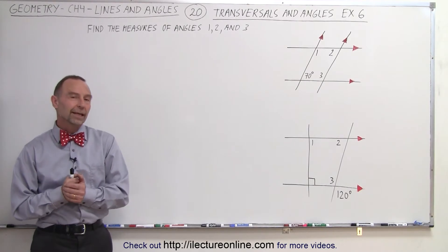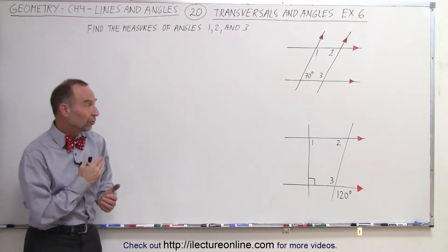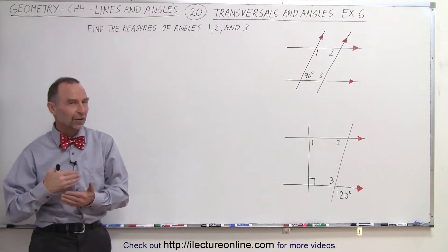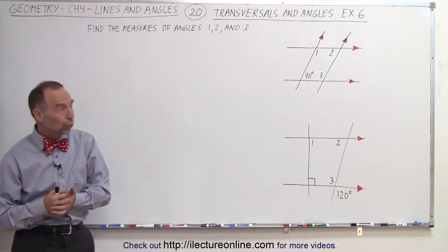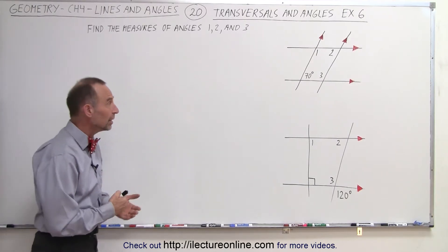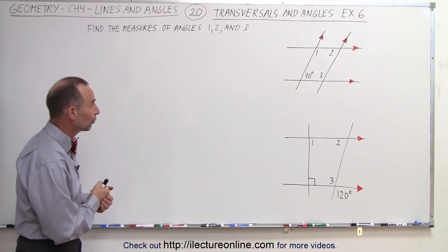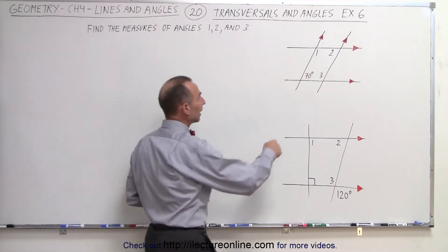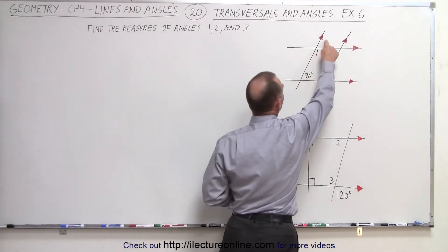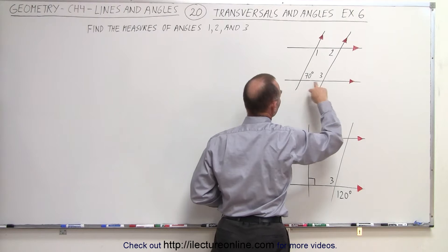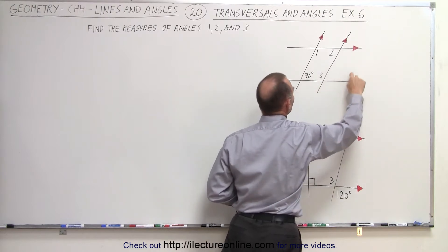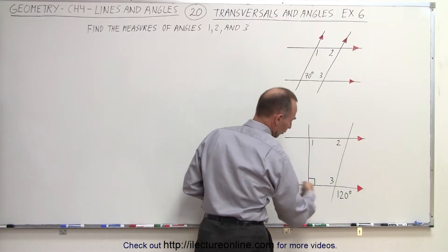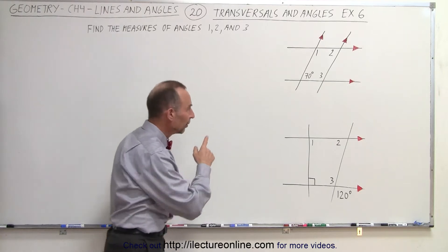Welcome to our lecture online. In these two examples, we're trying to determine the measures for angles 1, 2, and 3 using the methods we've learned so far. Notice that these indicators mean that these two lines are parallel, and the same over here — these two lines are parallel as well.